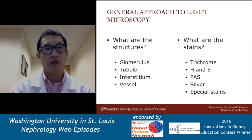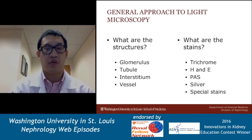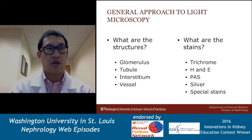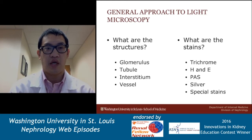What I'm going to start with here is the general approach to light microscopy. We all know that when we look at a kidney biopsy, we're looking at certain structures: the glomerulus, the tubule, the interstitium, and the vessel. Just like when we put a patient's AKI into a box of pre-renal, post-renal, or intrinsic AKI — if it's intrinsic AKI, we then try to determine what compartment of the kidney is involved.